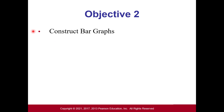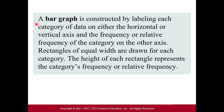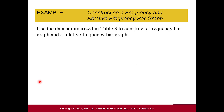Next, we're going to construct bar graphs. A bar graph is constructed by labeling each category of data on either the horizontal or vertical axis, and then the frequency or relative frequency is on the other axis. Rectangles of equal width are drawn for each category, and the height or length of each rectangle represents the category's frequency or relative frequency. We'll use the previous example to construct both a frequency bar graph and a relative frequency bar graph.